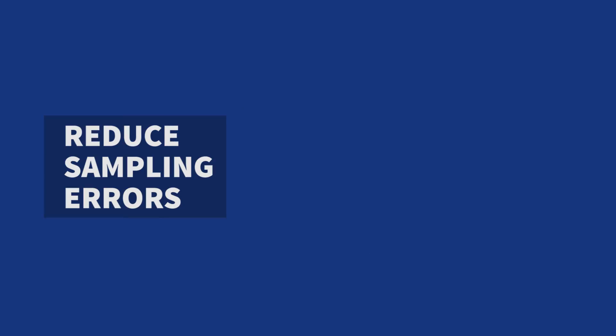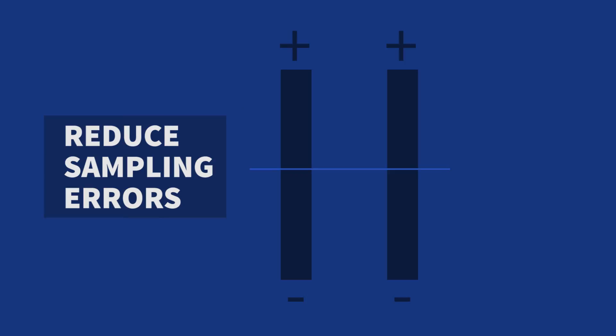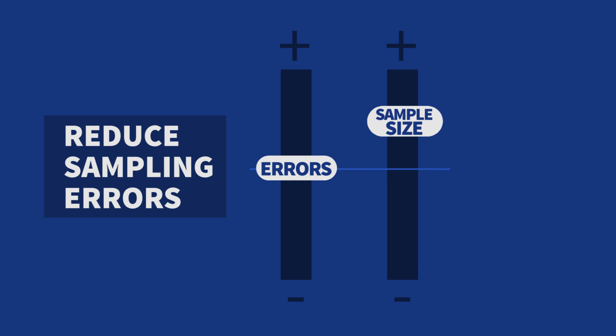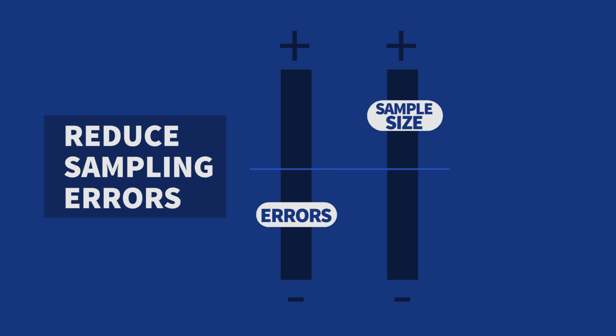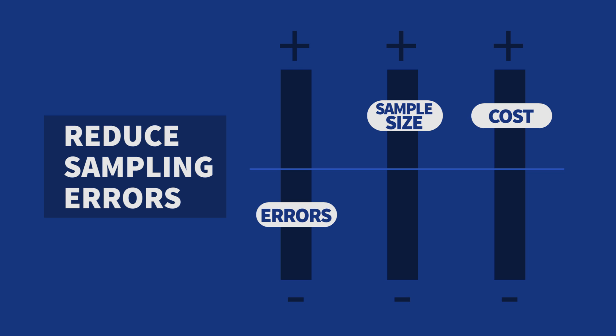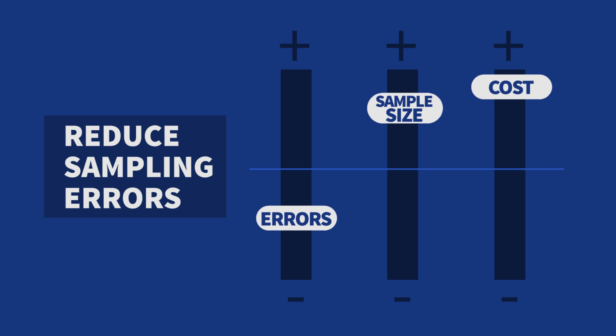We can reduce sampling error by increasing the sample size — that is, you can select more subjects to observe. As your sample size increases, your sampling error decreases. But increasing your sample size also increases cost, both in time and in money. And after about a thousand cases, you start to get less bang for your buck.